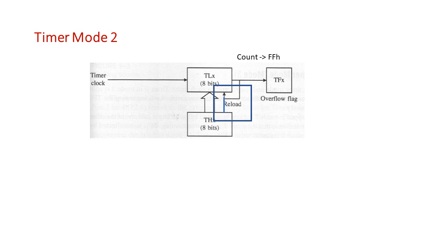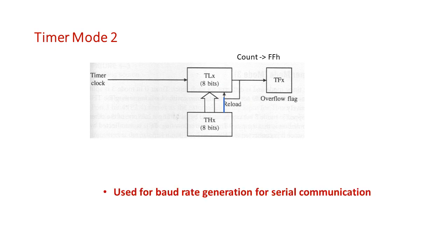Since in this mode the counter works continuously once started — the count is automatically reloaded with no need to start and stop the timer again and again — it works continuously. Therefore, this mode is generally used to generate a baud rate for serial communication, meaning the clock generated by this mode serves as the clock signal for the serial communication block.